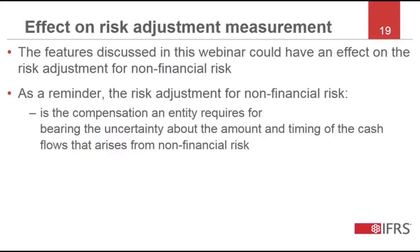The previous slides discussed the effect of the four features on the present value of future cash flows. This is a reminder that the entity will need to consider whether these four features could also have an effect on the measurement of the risk adjustment for non-financial risk. The risk adjustment is the compensation an entity requires for bearing the uncertainty about the amount and timing of the cash flows that arises from non-financial risk.